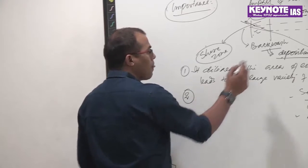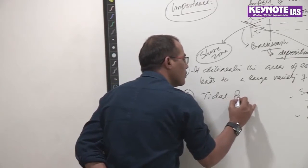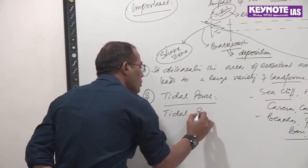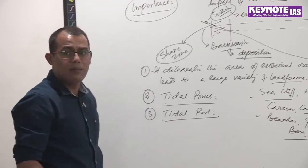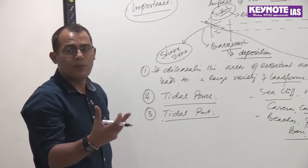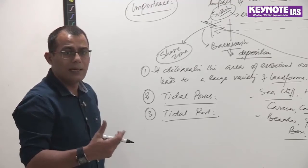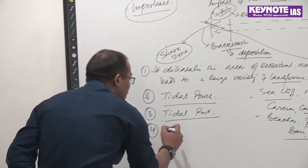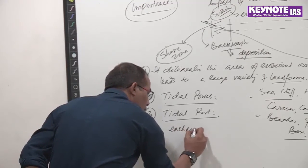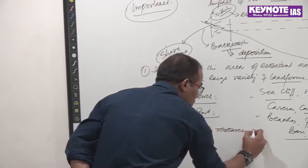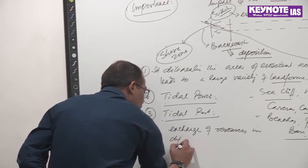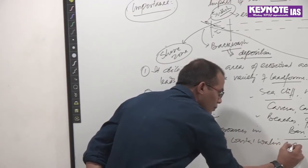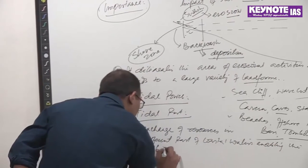The second point is tidal power. The third is tidal port — even shallow water areas can be transformed into a port where the natural depth of water may not be sufficient, yet it can anchor ships of larger size. Then we have exchange of resources in different parts of coastal waters, enabling the biotic community to thrive.